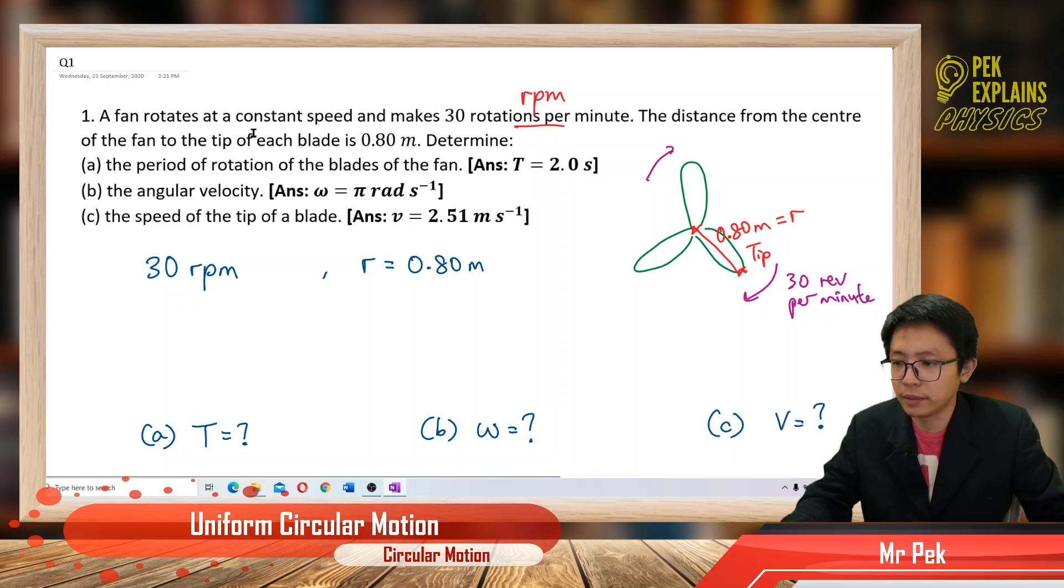Now the distance from the center of the fan to the tip of each blade is 0.8 meter. So from center to the tip is 0.8 meter. This is the radius.